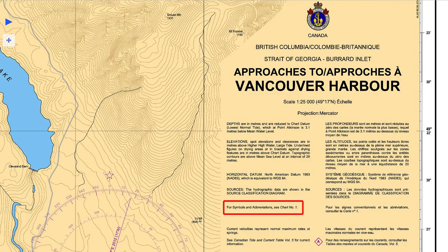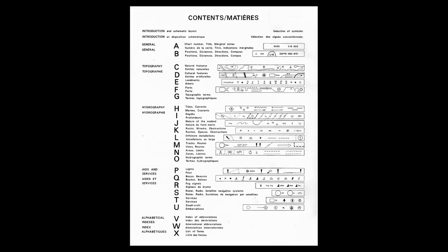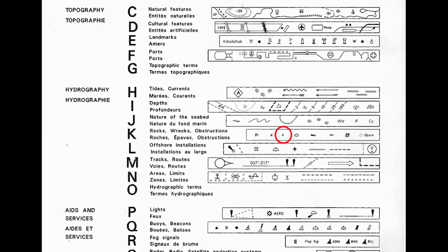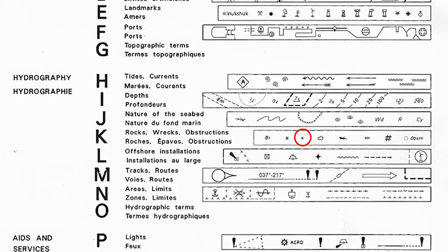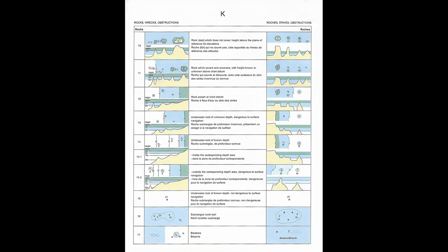On topographic maps, the legend for the symbols used on the map is usually printed on the back of the map. For nautical charts, the legend is printed in a publication, ironically called chart number 1. There is a key on the back of the publication to help narrow down your search. For example, let's say we're looking for this symbol in chart number 1. We would look for the symbol in the key that most closely resembles the symbol we are looking for — in this case, the little plus sign. We see that it is in section K: rocks, wrecks and obstructions. We turn to section K and we see that there are two columns.